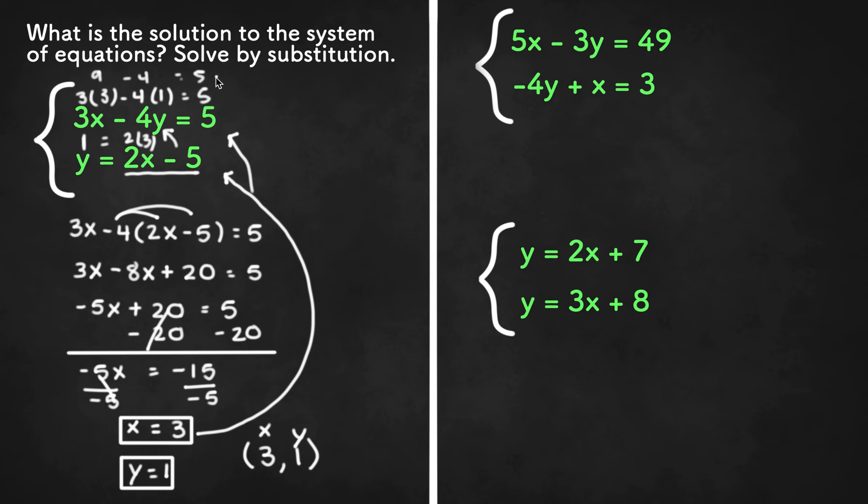So for the second equation, if we plug this in we have 1 equals 2 times 3 minus 5. 2 times 3 is 6. 6 minus 5 is 1. And since 1 equals 1 we know that we got the right solution, which is 3, 1.